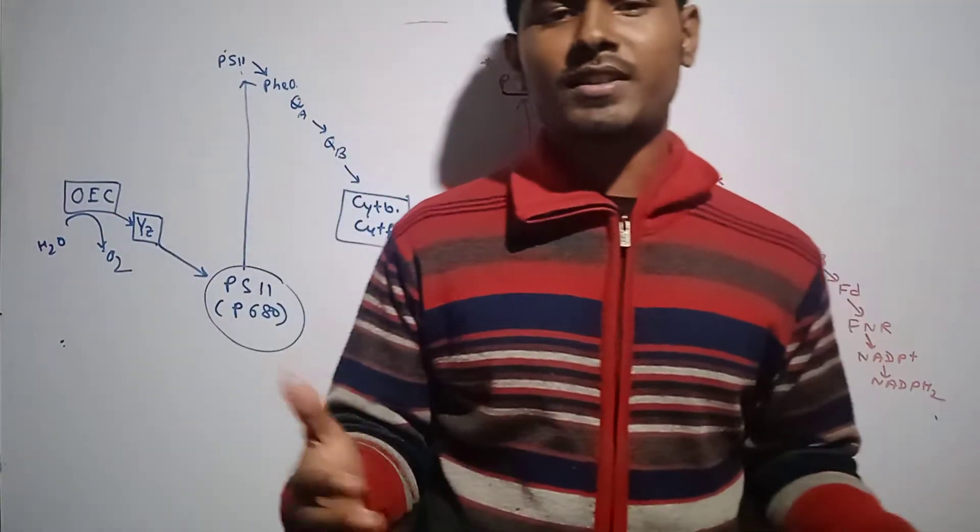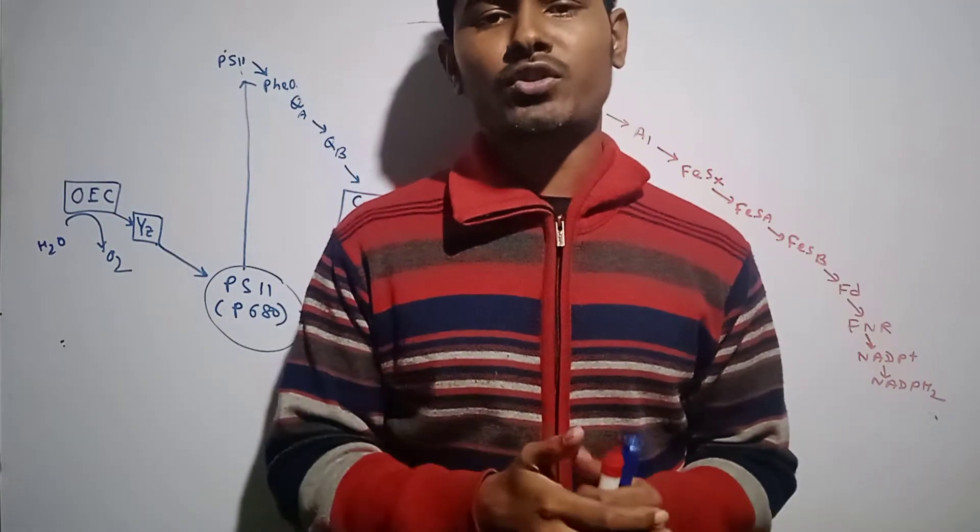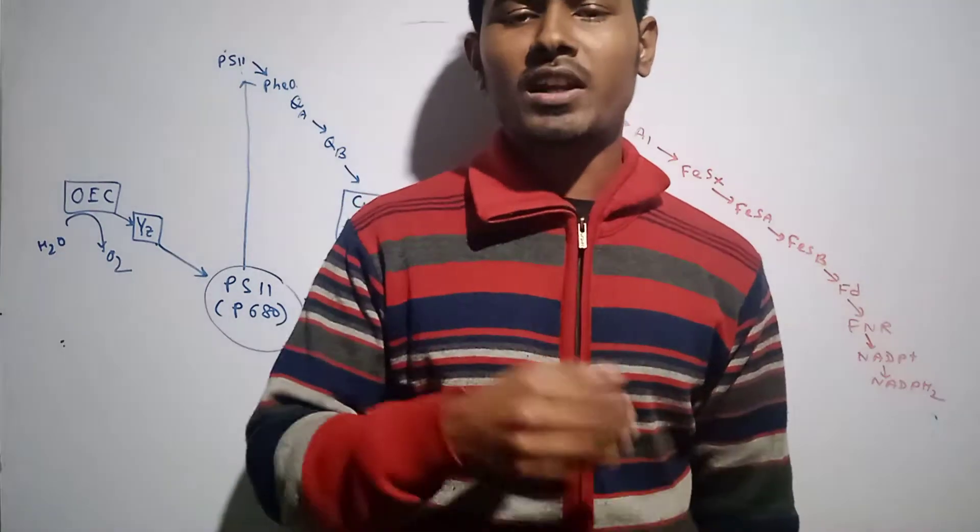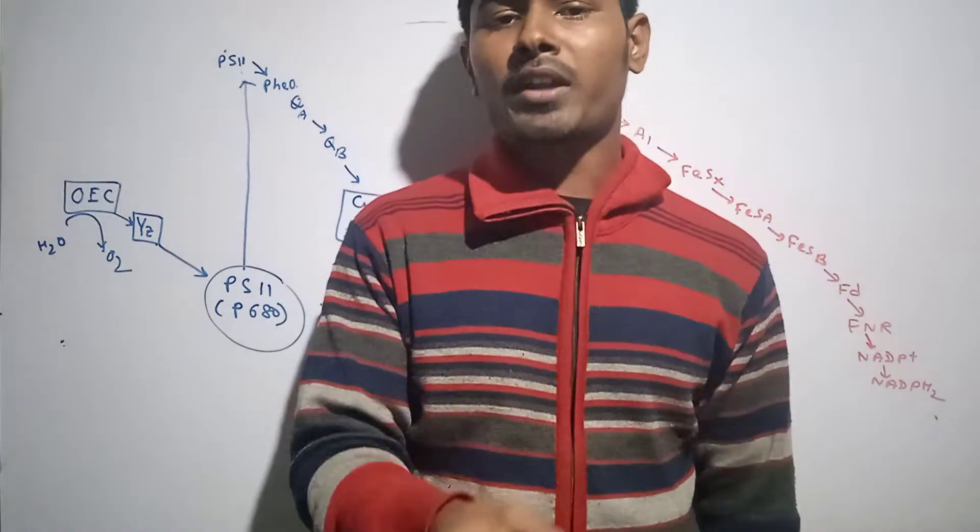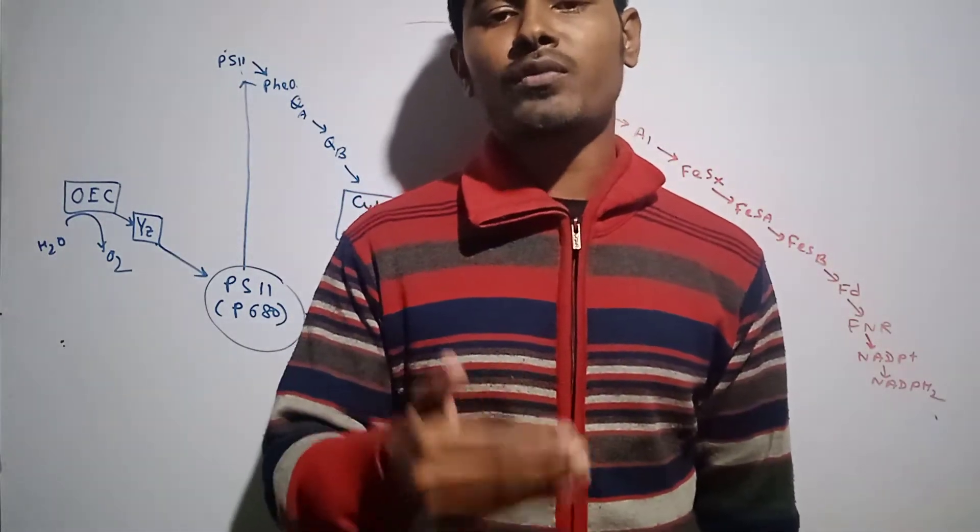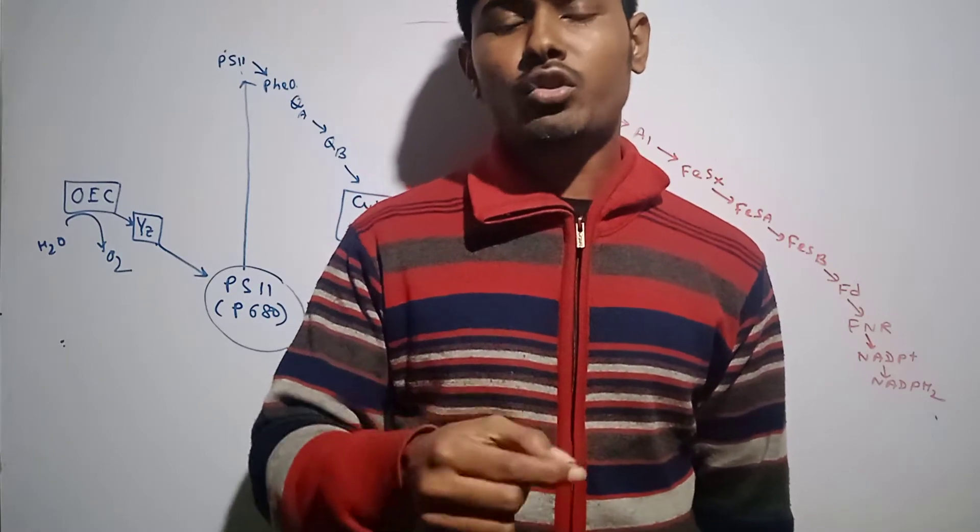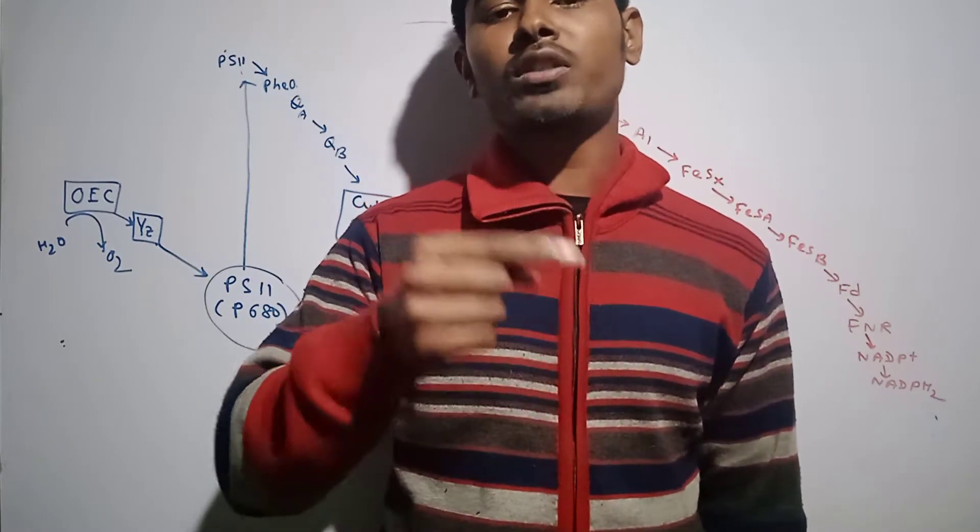Welcome to Circuit Buddy. Today we'll be discussing the Z-scheme in the photochemical phase of photosynthesis. In the Z-scheme, electrons are released by the reaction center chlorophyll of the photosystems and the electrons go from one electron carrier to another.